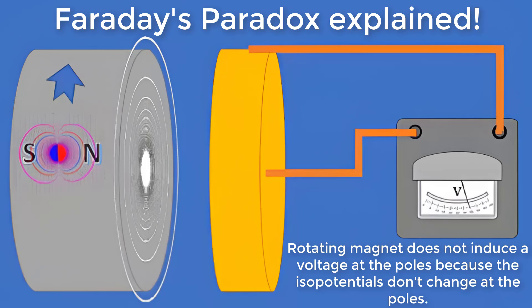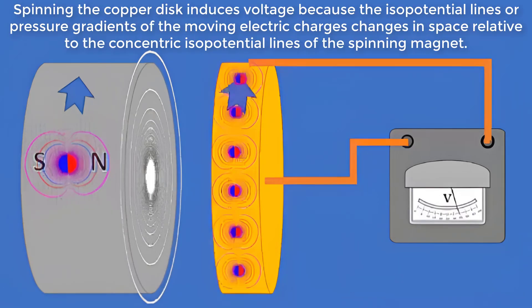Faraday's paradox explained. Rotating magnet does not induce a voltage at the poles because the isopotentials don't change at the poles. Spinning the copper disk induces voltage because the isopotential lines or pressure gradients of the moving electric charges changes in space relative to the concentric isopotential lines of the spinning magnet.